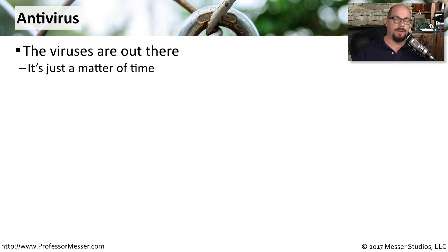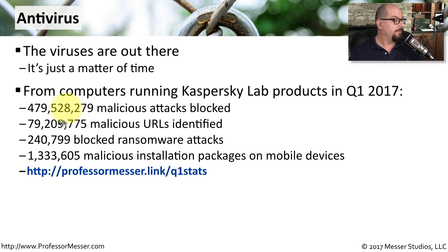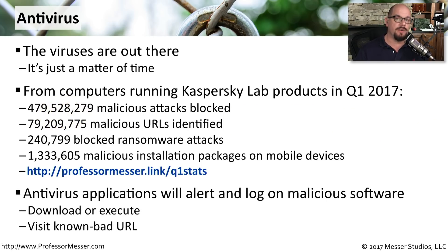One common type of log you might see in your operating system is an antivirus log. This is software running in the operating system and looking for viruses to be downloaded and executed. As a point of reference, statistics from Kaspersky Lab in the first quarter of 2017 showed that over 479 malicious attacks were blocked and over 79 malicious URLs. Usually when your antivirus software identifies this kind of activity, it will stop a download, prevent execution of the software, or prevent your system from visiting a known bad URL.